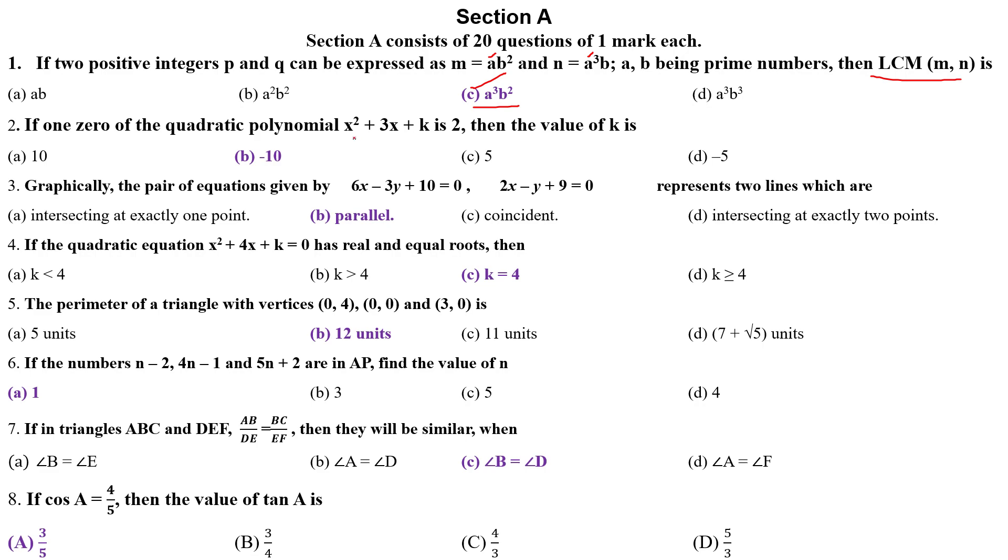If zero of the quadratic polynomial x squared plus 3x plus k is 2, that means x equals 2. When you put in this polynomial, then it will be 2 to the 4 and 3 to the 6. 4 plus 6 is 10. 10 plus k equals 0, then k equals minus 10. Which option is correct? B option is the correct answer.